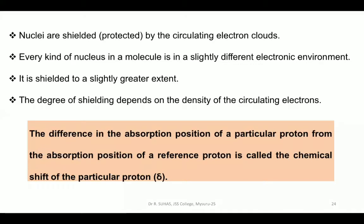Once these nuclei are present in molecules and surrounded by electron clouds, they are said to be shielded — in other terms, protected. In a molecule, there will be different kinds of nuclei, all having slightly different electronic environments. Hence, the shielding will be to varying extents. The degree of shielding depends upon the density of the circulating electrons — more electron density means more shielding.